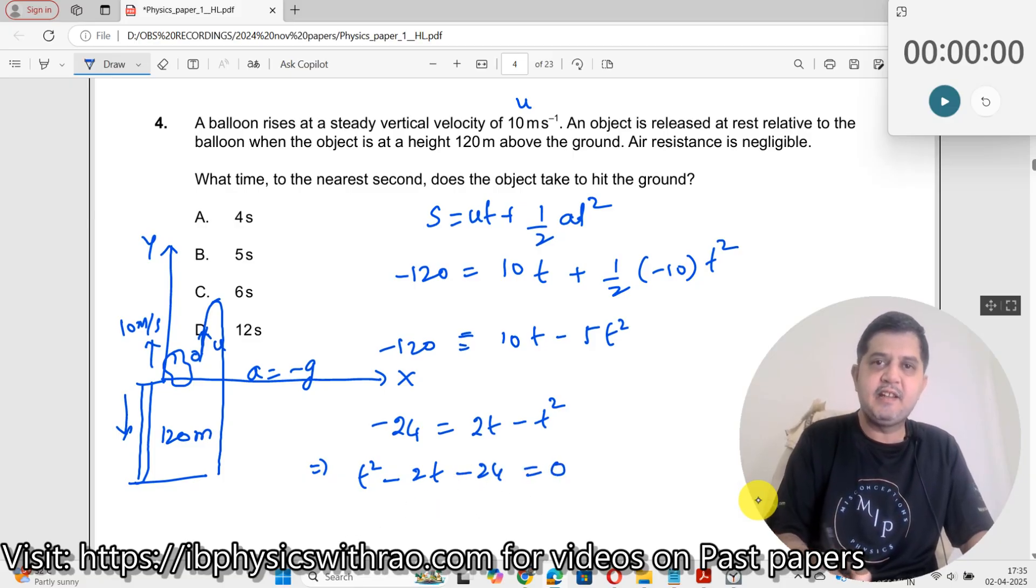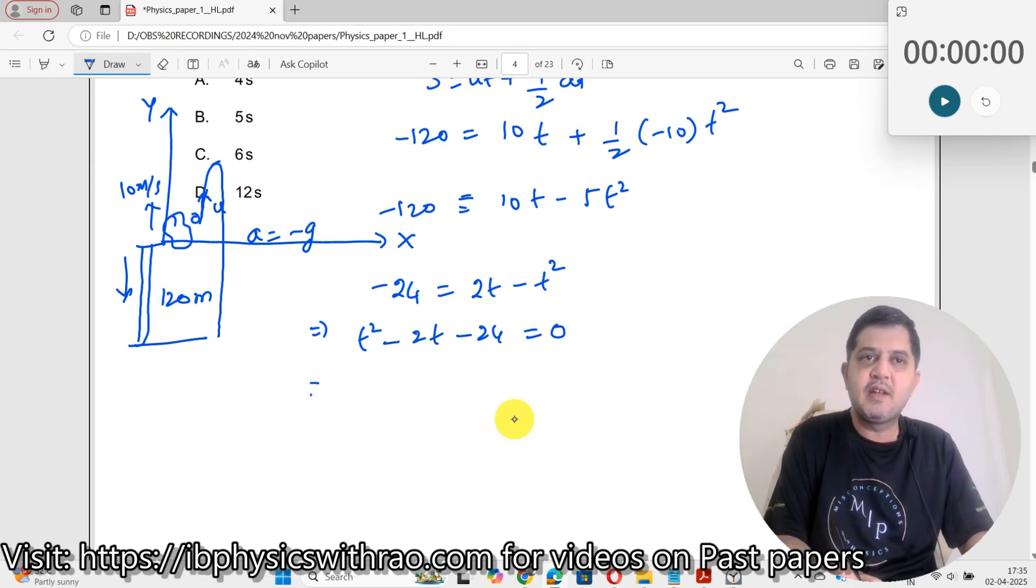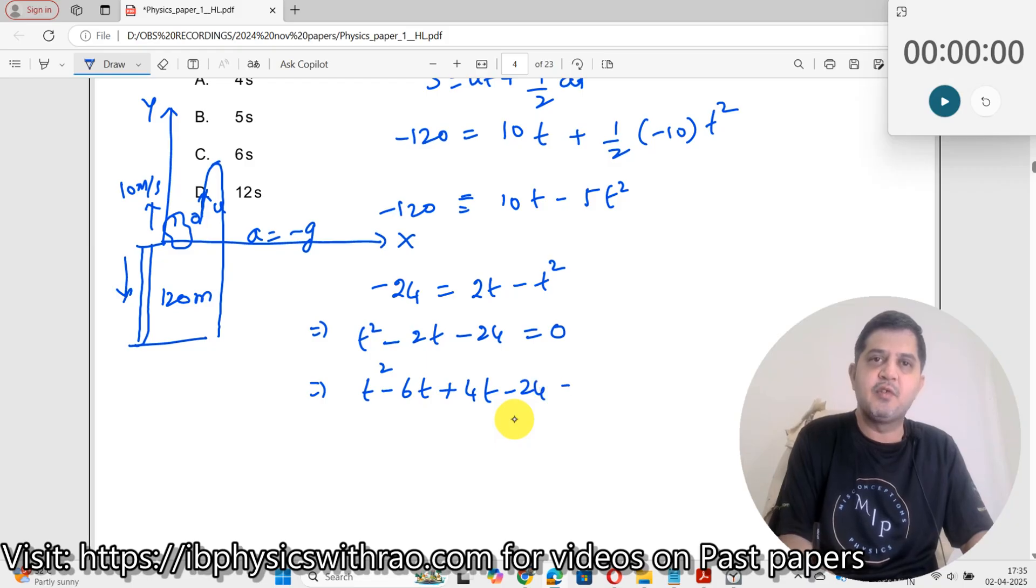Now let me factorize this. When I factorize this, what do I get here? I can write this as, this is 6 times 4 is 24. I can write t squared minus 6t plus 4t minus 24 equals 0.